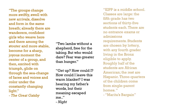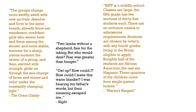Let's take a look at another passage. This one comes from Marita's Bargain. It reads: 'KIPP is a middle school. Classes are large. The fifth grade has two sections of 35 students each. There are no entrance exams or admissions requirements. Students are chosen by lottery, with any fourth grader living in the Bronx eligible to apply. Roughly half of the students are African-American, the rest are Hispanic. Three-quarters of the children come from single-parent homes.' Notice that in this example we have short sentences, and even sentences that are longer are divided into two short clauses. These work to allow Gladwell to state basic facts about the KIPP School that are important to the reader's understanding of his overall message, making the passage feel very informative.